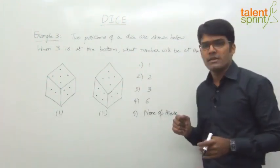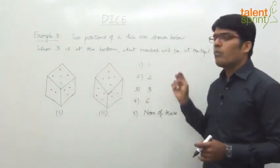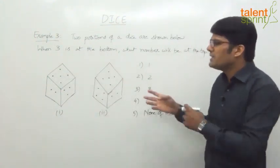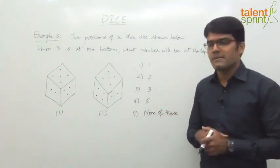So here again two positions are shown and we are supposed to find out what comes opposite to 3. When 3 is at the bottom, what will be at the top? Now here the difference is, instead of numbers, dots have been given, like a general dice that we have.